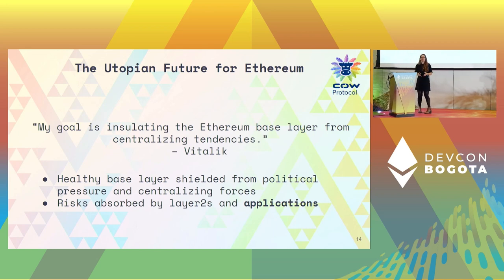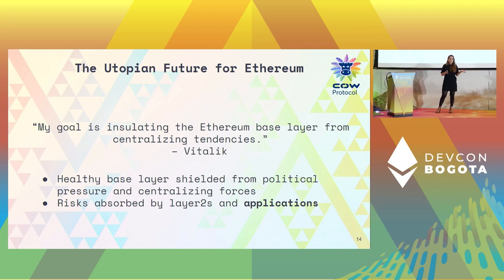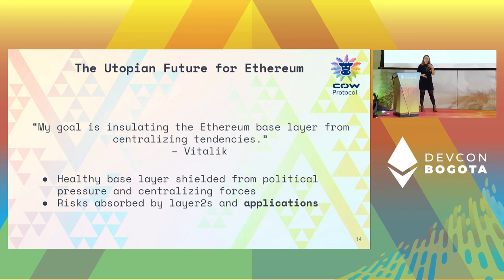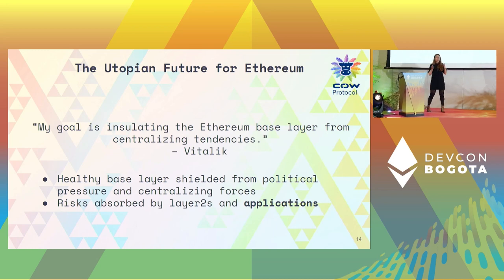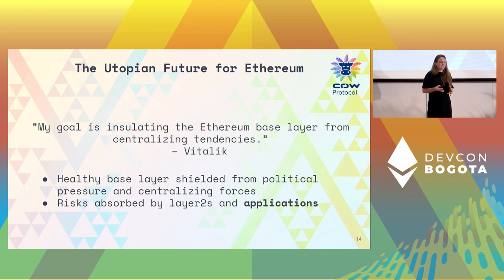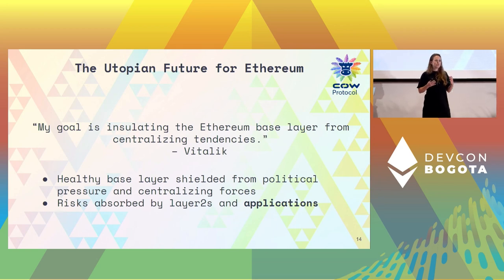We need to find a way to stop this cycle — currently our solution is to move centralization from validators to block builders, but now block builders are centralizing too. We need a better structured way of protecting the Ethereum core protocol. What Vitalik himself said is that these risks need to be absorbed elsewhere — either by layer twos or by the applications themselves.